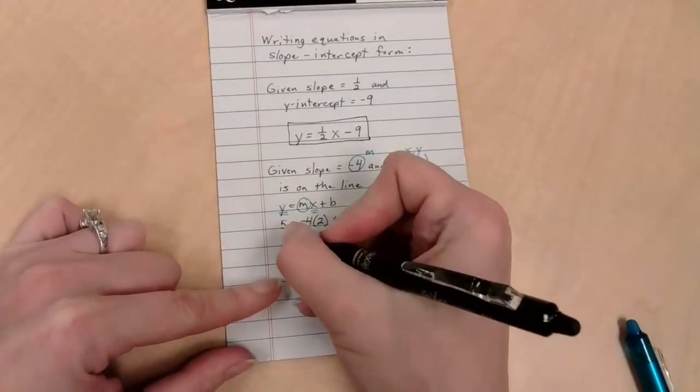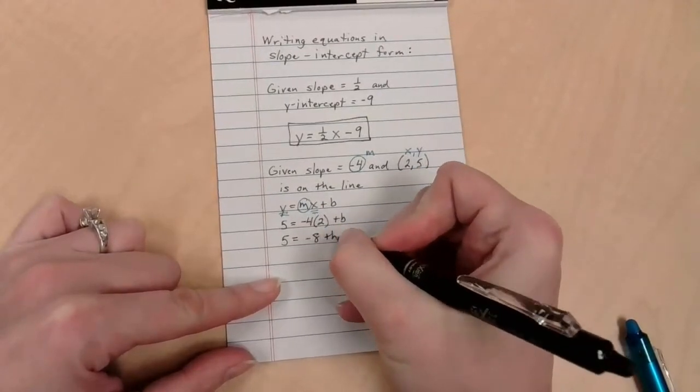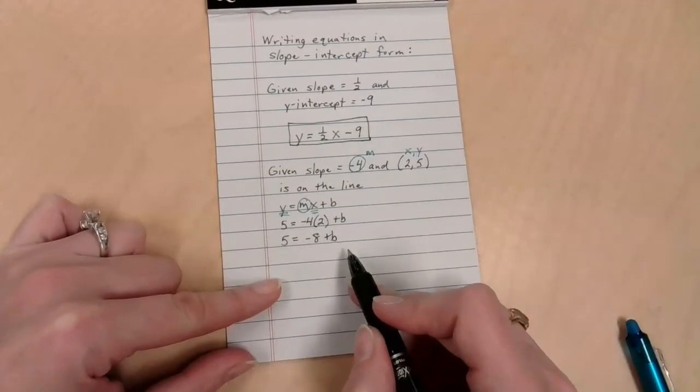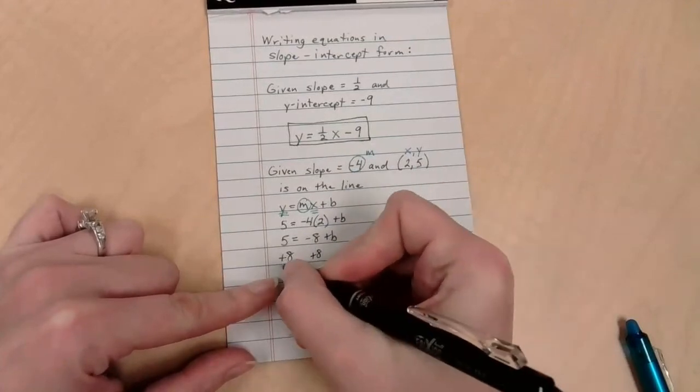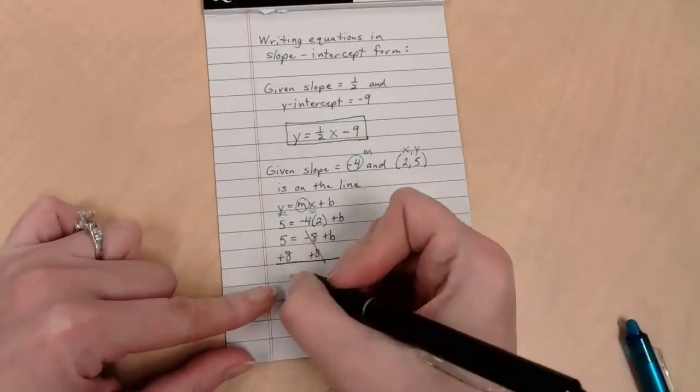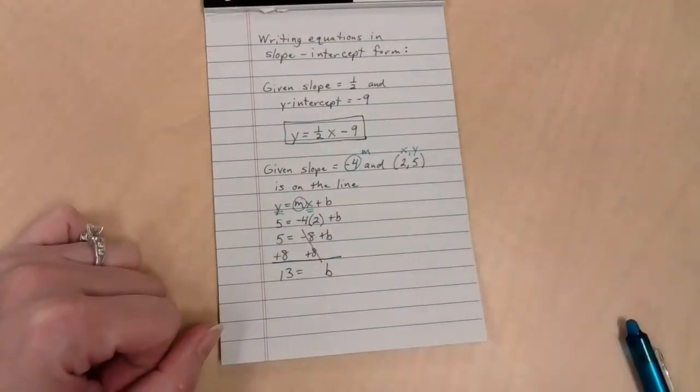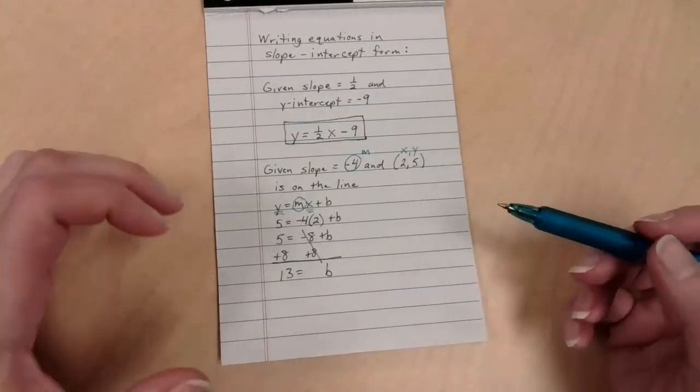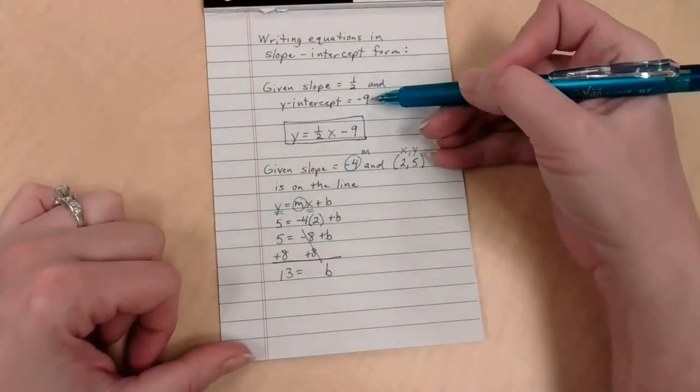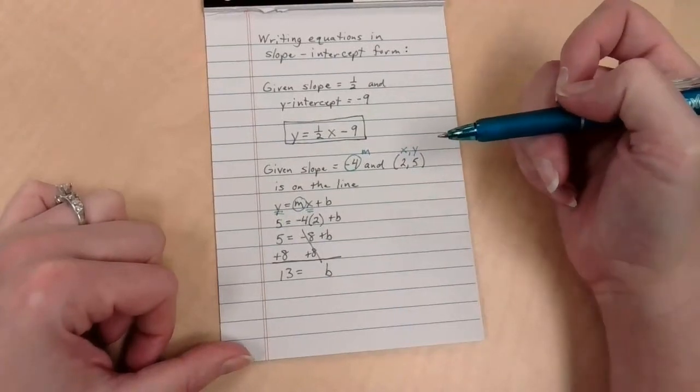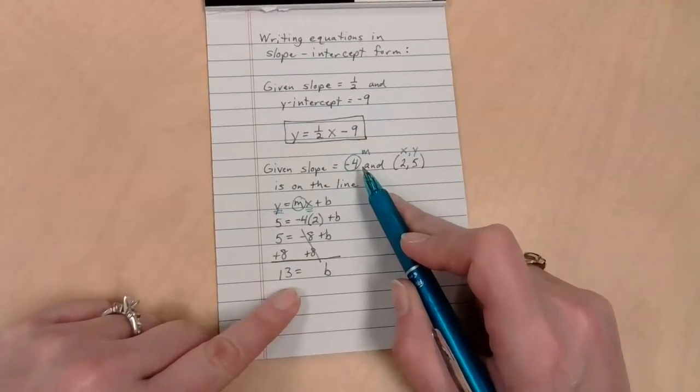Simplify. 5 is equal to negative 4 times 2 is negative 8 plus b. I'd really like to know what b is so I can write my equation. That means I want to get the b by itself. So I'm going to undo the minus 8 with a plus 8 plus 8 again on both sides. That's going to be 13 is equal to b. We now have a slope and a y-intercept. We're all set to go.